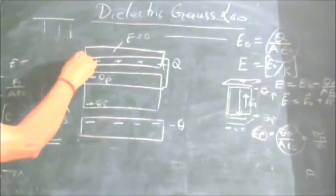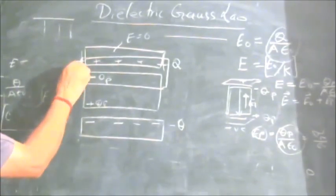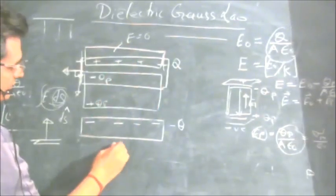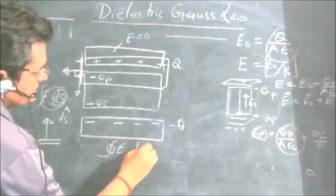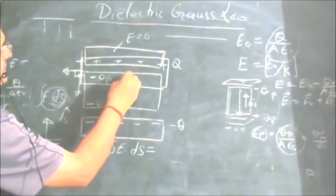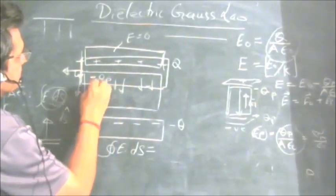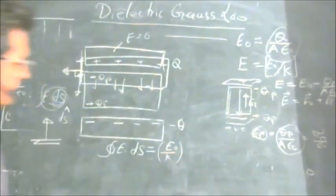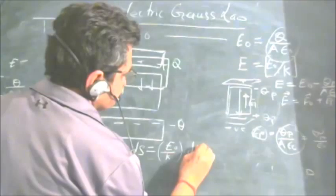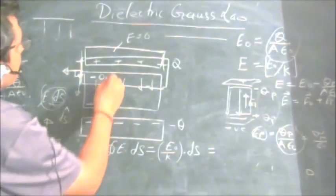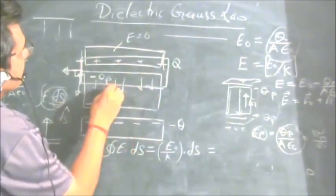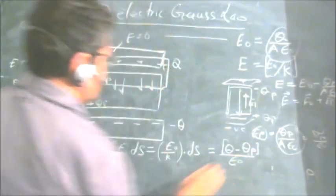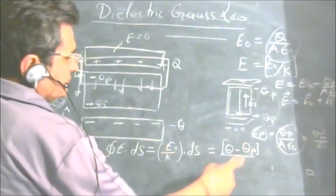With E in one direction and the surface area vector perpendicular on the lateral sides, E·dS is zero on those sides. Inside the conductor there is no electric field. Writing the surface integral, the net contribution is from the face inside the capacitor: the electric field there is E0/K. So the surface integral gives (E0/K) times A. The charge enclosed by the Gaussian surface is Q minus Q_P, so E·dS = (Q - Q_P) / epsilon_0.